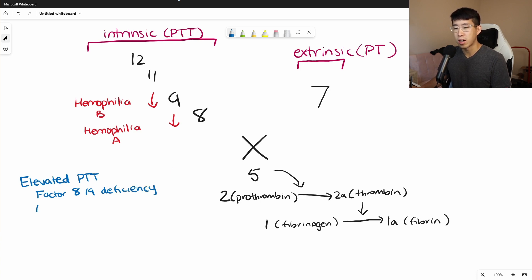So factor inhibitors, which are basically when you create antibodies against factor eight and against factor nine, and that causes the prolongation in your PTT.